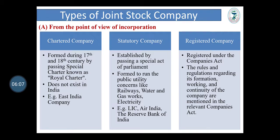Second type: statutory company. It is established by passing a special act of parliament. It is formed to run public utility concerns like railways, water, gas, electricity, etc. Examples: LIC, Air India, and the Reserve Bank of India are statutory companies. Registered company: these companies are very important; they are registered under the Companies Act. The rules and regulations regarding formation, working and continuity of the company are mentioned in the relevant Companies Act.